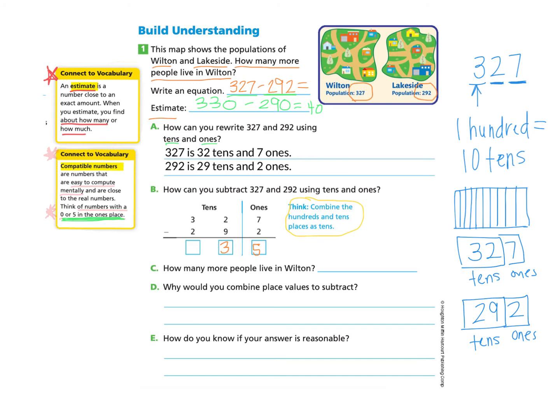Part C asks, how many more people live in Wilton? And we can answer 35 more people. Part D asks, why would you combine place values to subtract? In the tens place, we were looking at two take away nine in the tens, and there wasn't enough. You can't take nine from two. So we had to go to the next place value and make these digits combined next to each other. So now we have 32 take away 29, which allows us to subtract and use mental math to find the difference between 32 and 29.